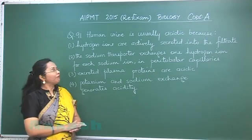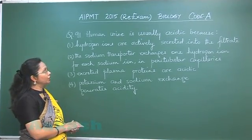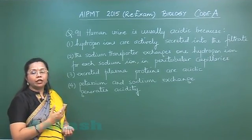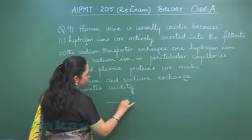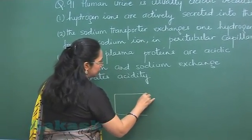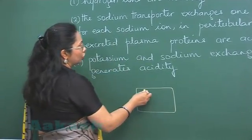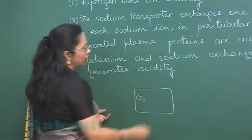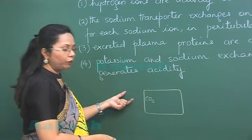Question number 91: Human urine is usually acidic because of hydrogen ions. If we take any of the cells of the nephron — let's say this is the epithelial cell lining the nephric tubule — this cell is producing carbon dioxide as a product of its own metabolism.